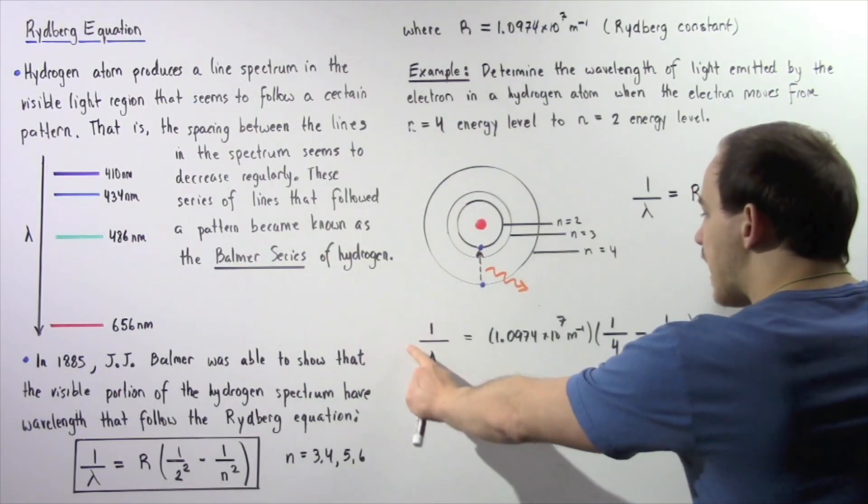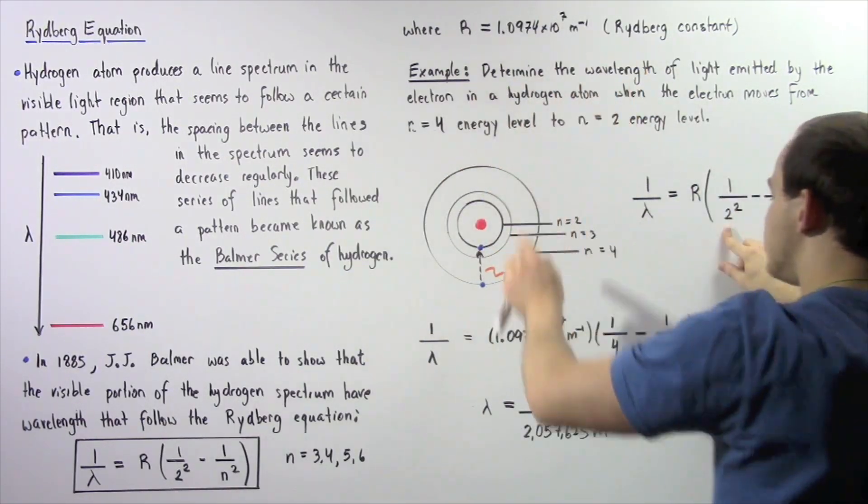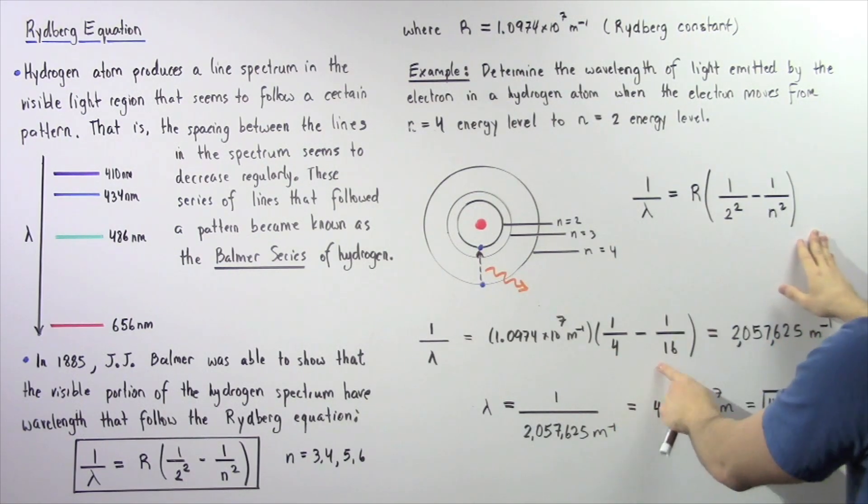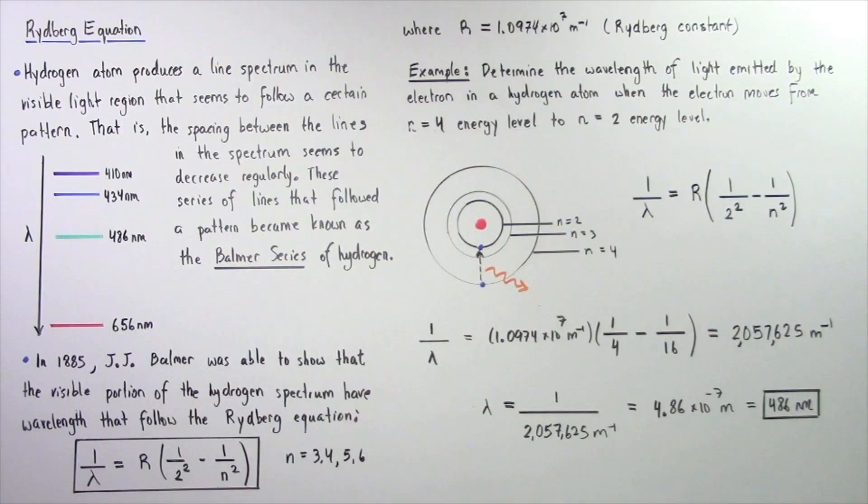So we're going from the fourth energy level back to the second energy level given by this n. So 1 divided by lambda is equal to this constant, multiplied by 1 divided by 4, minus 1 divided by 4 squared, or 1 divided by 16.